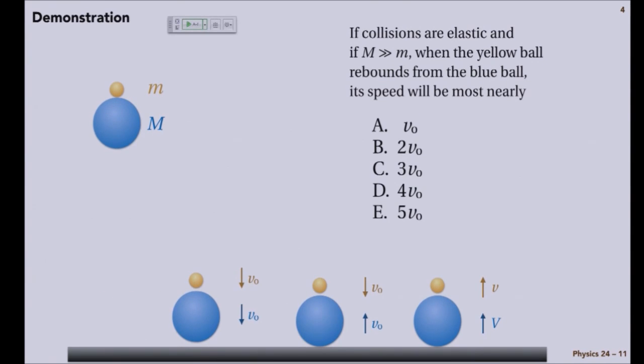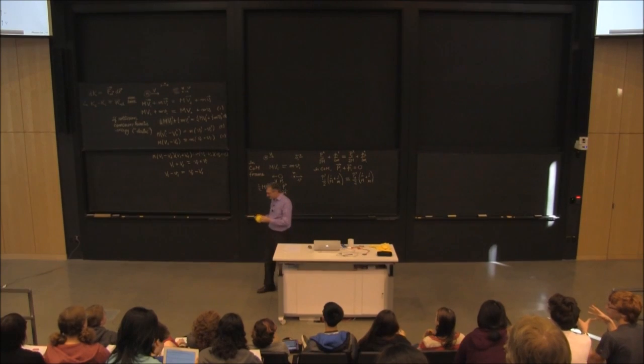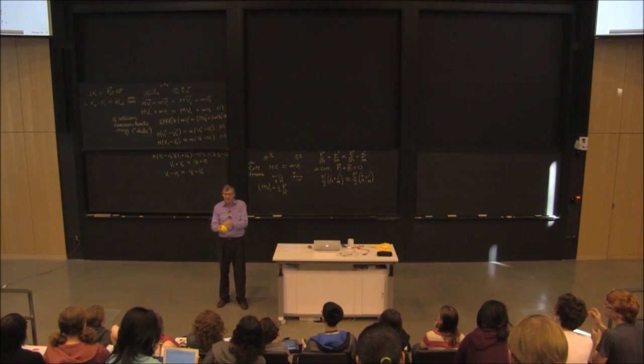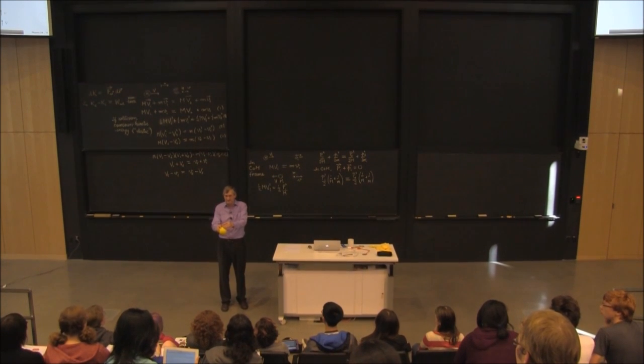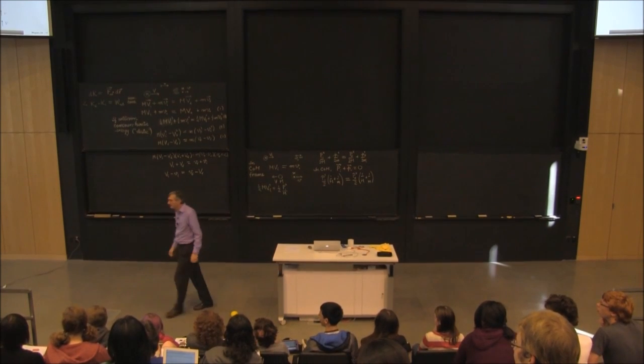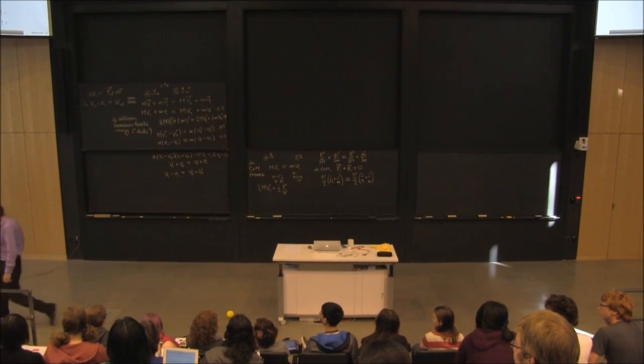And my question for you is: If the collision, if all the collisions are elastic, and if the blue ball's mass is way big compared to the yellow ball's mass, then when the yellow ball rebounds from the blue ball, its speed will be most nearly which? All right, I'm terrible at this demo. So it may take a couple of tries. And then I'll give up. That's about as good as I'm ever going to do.